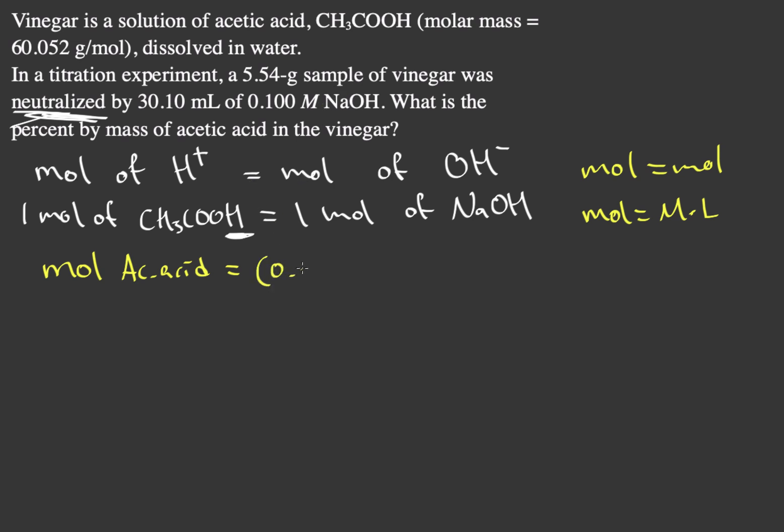So we have 0.0301 liters times our 0.100 molar NaOH. So the moles of acetic acid is equal to the molarity times the liters of our sodium hydroxide, and that gives us 0.00301, and this is only three significant figures. We're only going to stop there. So we have our moles of acetic acid.